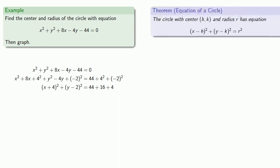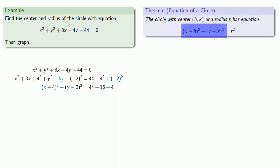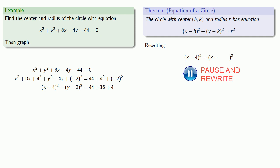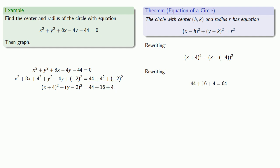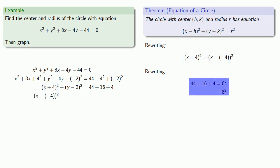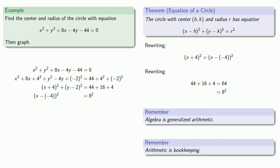Bringing back the equation of a circle, we want this in the form (x minus h) squared plus (y minus k) squared equals r squared. So we rewrite (x plus 4) squared as (x minus negative 4) squared. The arithmetic on the right — 44 plus 16 plus 4 — equals 64, which is 8 squared. So instead of x plus 4 squared, we write x minus negative 4 squared, and instead of 44 plus 16 plus 4, we write 8 squared. We still have (y minus 2) squared.